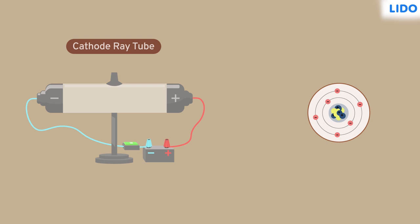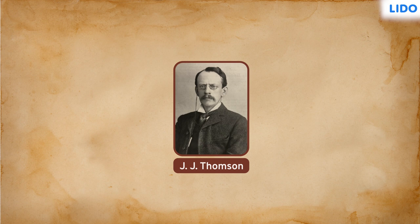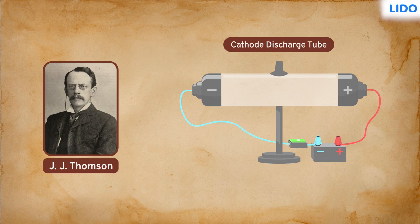But did you know that cathode ray tubes played a major role in the discovery of subatomic particles? Yes, in 1897, J.J. Thomson studied a cathode discharge tube with a metal plate fitted at either end.